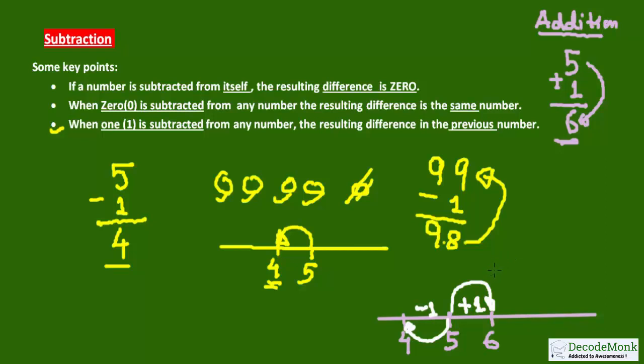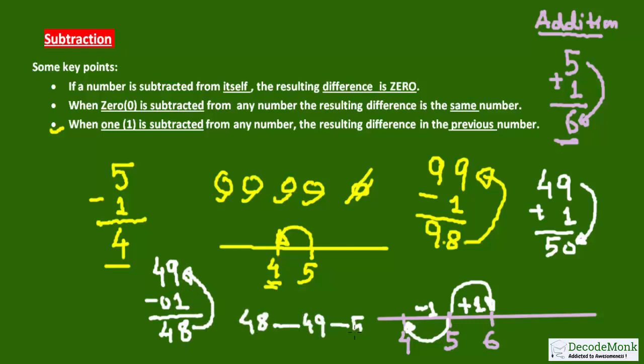Let's take one more example: 49 plus 1 will be 50. 50 is the very next number of 49, whereas 49 minus 1 will be 48. 9 minus 1 is 8, 4 minus 0 is 4, so 48. 48 comes before 49, so 48, 49, and then 50. Plus 1 from 49 here takes you to 50, and minus 1 here, I have done the calculation, will take you to 48. 49 plus 1 takes you to the next number, that is 50, and 49 minus 1 takes you to 48, that is the previous number.